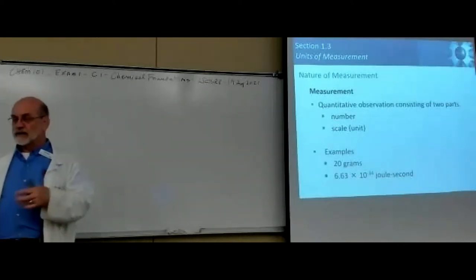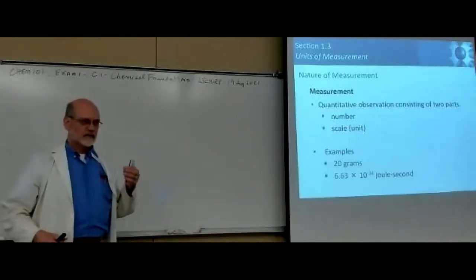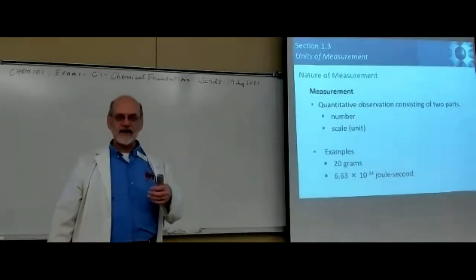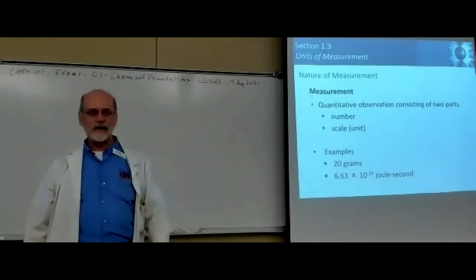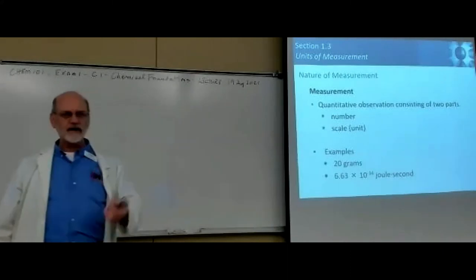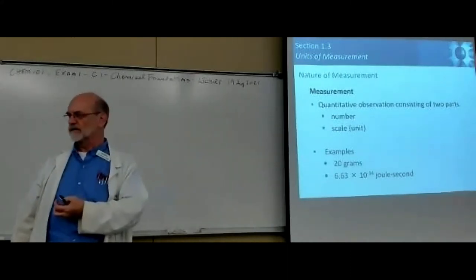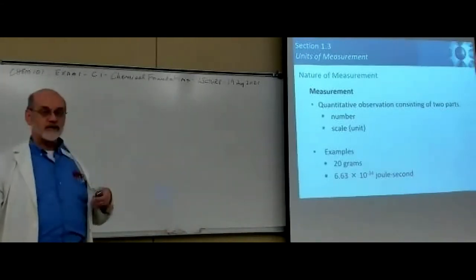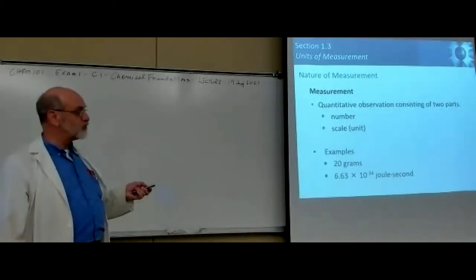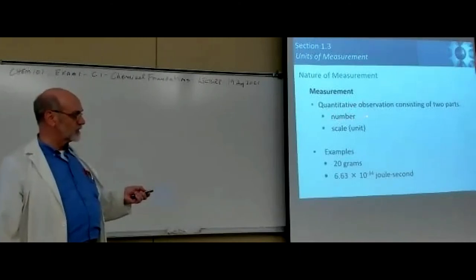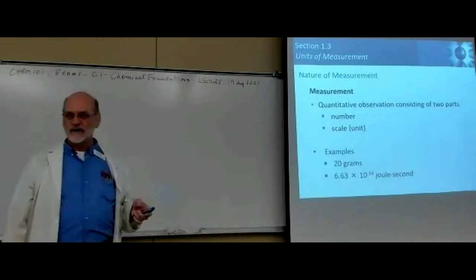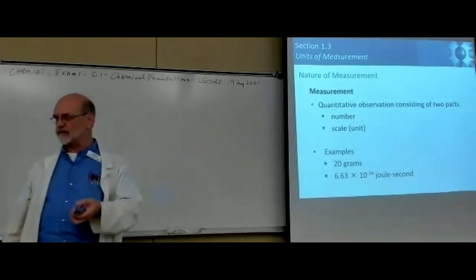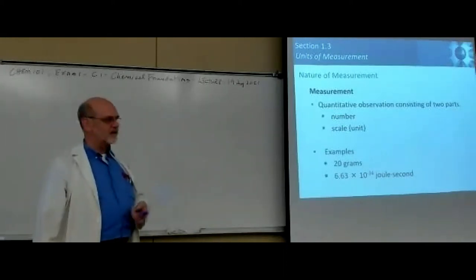You can make observations that are qualitative, like the sky is blue. That's not a quantitative measurement, that's not a number. It's just an observation. But when we make measurements in science, in chemistry, you have two parts to it: you have a number, but a number without a unit of measure doesn't mean much unless you know where that number came from.